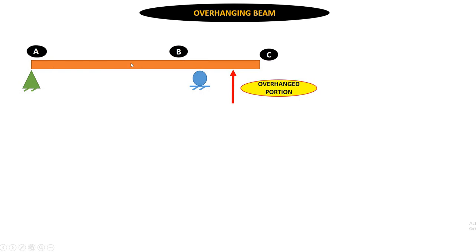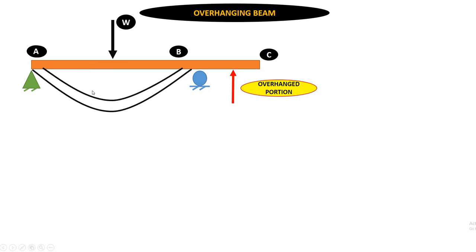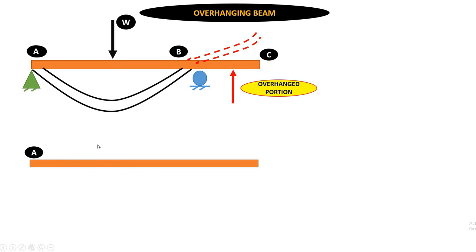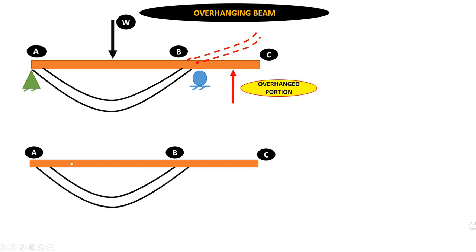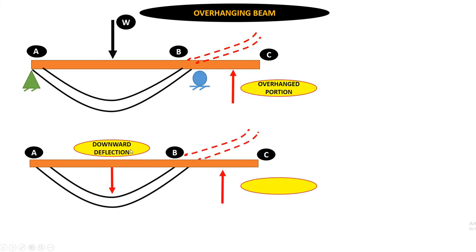If I apply a downward load, the deflected shape of AB is a sagging shape, while the overhanging part BC will lift up, giving an upward deflection. So in the AB portion we have downward deflection like a sagging shape, and in the BC portion we have upward deflection like a hogging shape. Therefore, the bending moment diagram for an overhanging beam is a combination of sagging as well as hogging.